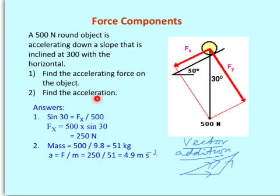Then to find out the acceleration, we use F equals ma rearranged. F is simply this, Fx. M is mass. And for mass, you have to divide the weight by 9.8 to give 51 kg. So 250 by 51, you get 4.9 meters per second squared.